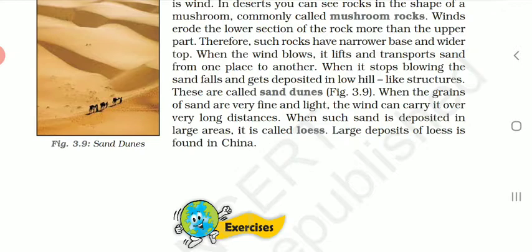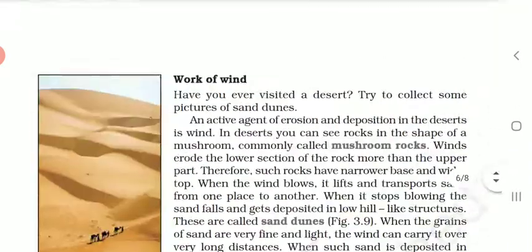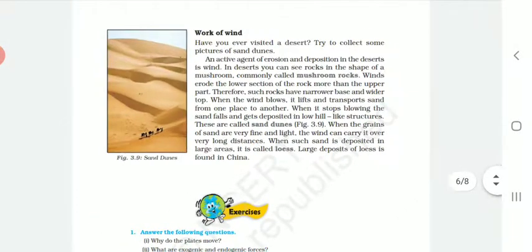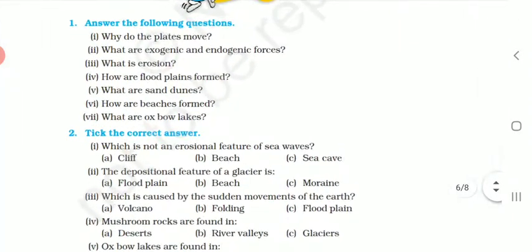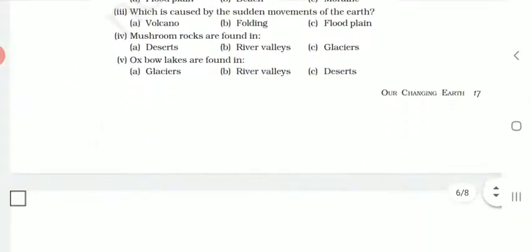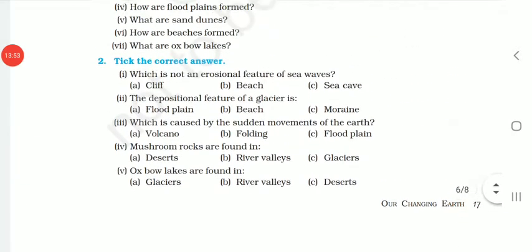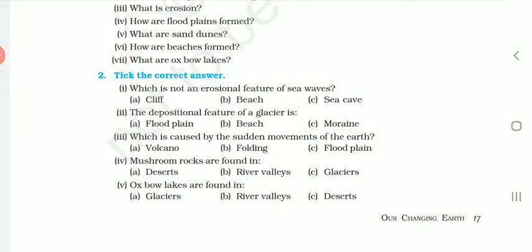When the grains of sand are very fine and light, the wind can carry them over very long distances. When such sand is deposited in large areas, it is called loess. Large deposits of loess are found in China. So here our chapter on Our Changing Earth is completed. In the next period, we are going to understand the questions and answers related to the chapter, and in this period we will take your doubts. Thank you very much.